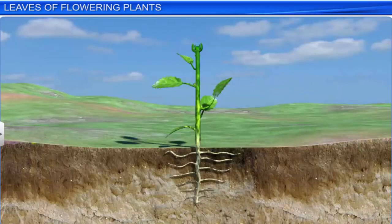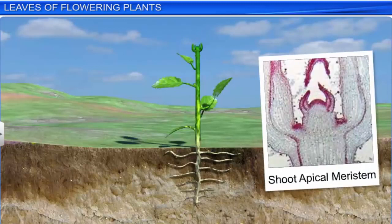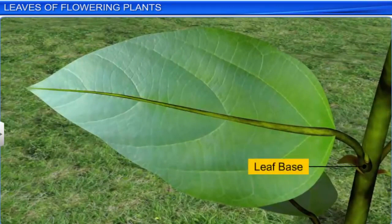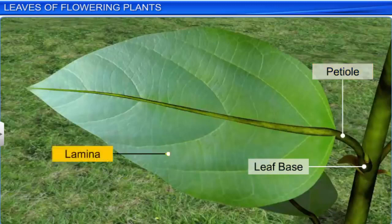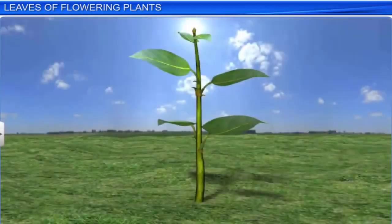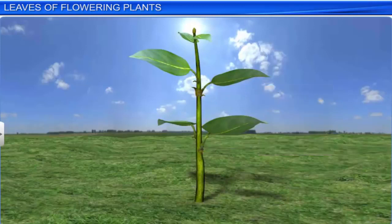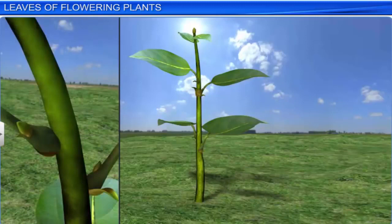The meristem found at the tip of a shoot is known as the shoot apical meristem. A typical leaf has three main parts: leaf base, petiole, and lamina. The leaf is attached to the stem by the leaf base, and may bear two lateral small leaf-like structures called stipules. In some leguminous plants, the base of the leaf may get swollen, which is known as pulvinus.